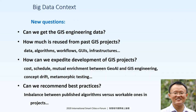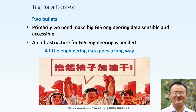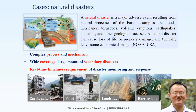In this topic, we are primarily focused on two bullets. First, we need to have an infrastructure that can make big GIS engineering data sensible and accessible. But this infrastructure for GIS engineering is not an easy job — a little engineering data may go a long way. Let's take a look at several cases.